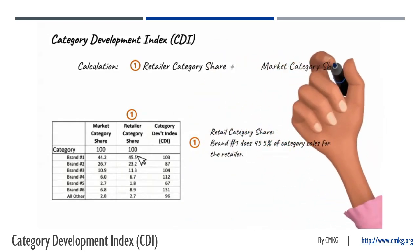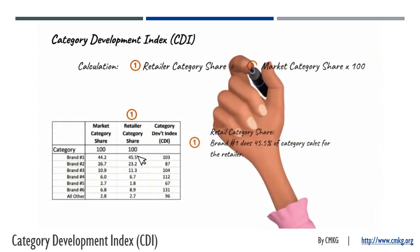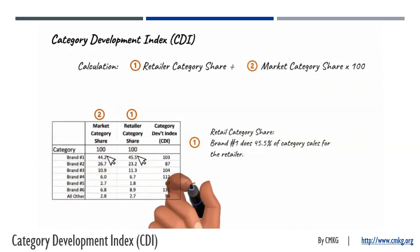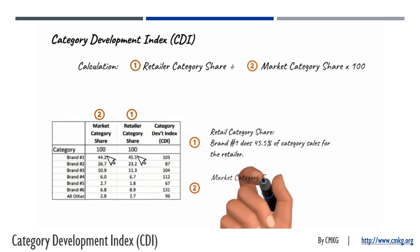This number is divided by the market category share, which in this example is 44.2. In other words, brand number one does 44.2% of the category sales for the total market.